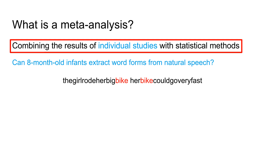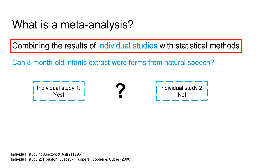Now, let's look at two out of many studies that have been conducted on this topic. Individual study 1 finds that yes, infants can extract word forms at 8 months, while study 2 does not find evidence for this. With the information we have so far, it is difficult to say why these studies come to different conclusions and whether one study's conclusions should be weighted higher than the other. For instance, study 1 could be a false positive, or study 2 a false negative.